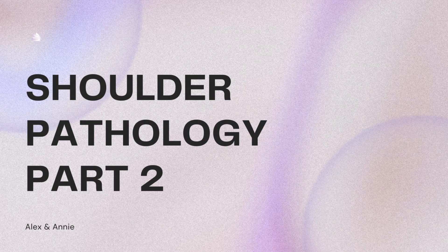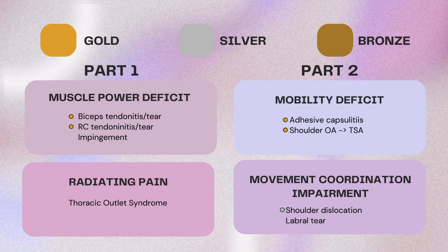We are back — Journey to 600. We're back talking about shoulder pathology part two. This is just the title slide we used last time. Part one covered muscle power deficit and radiating pain. Part two we're going to cover mobility deficit and movement coordination impairment. It is based on the Score Builders book, and the content is highly seen on boards.